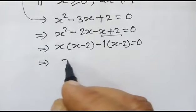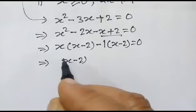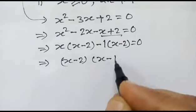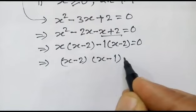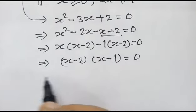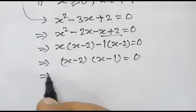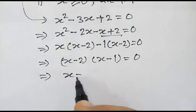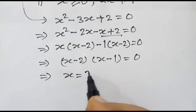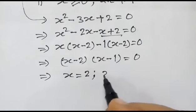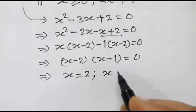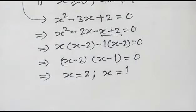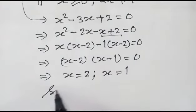So x minus 2 times x minus 1 is equal to 0, giving us two roots of the equation: x is equal to 2 and x is equal to 1.